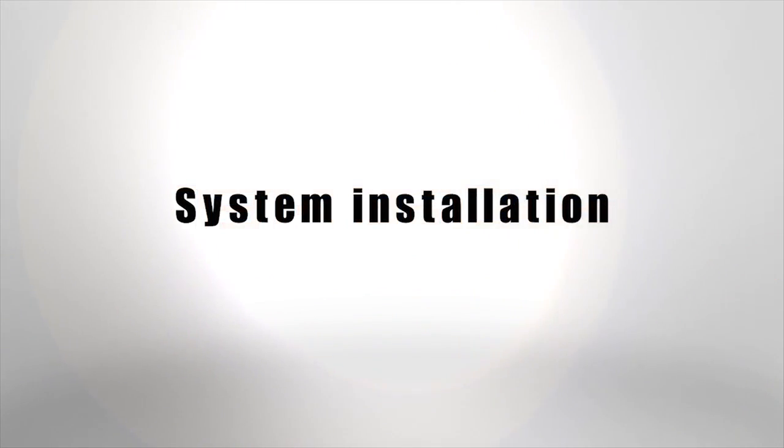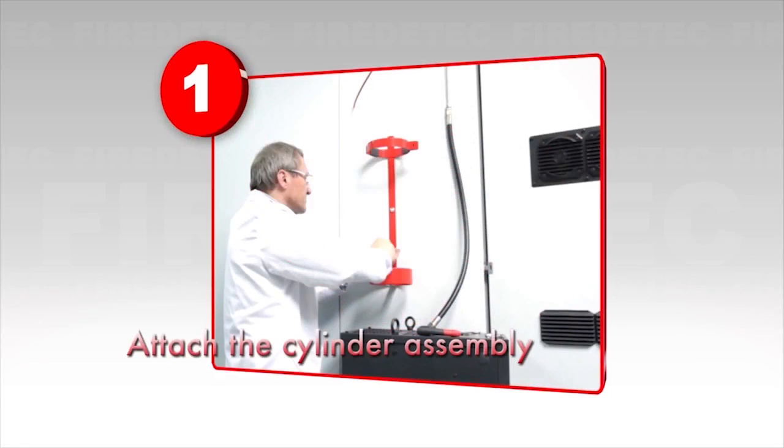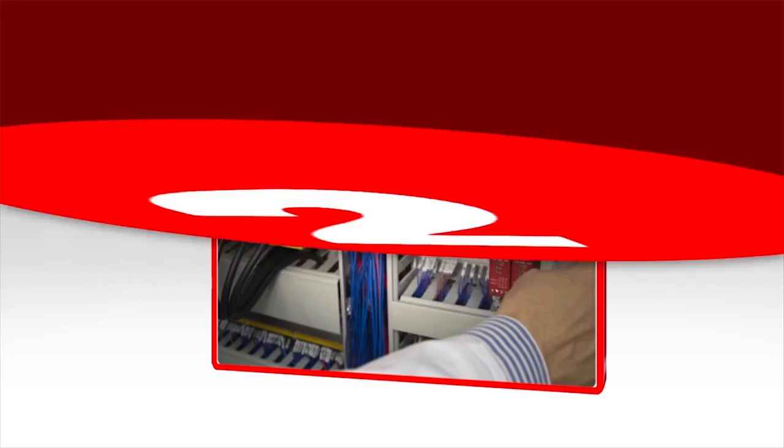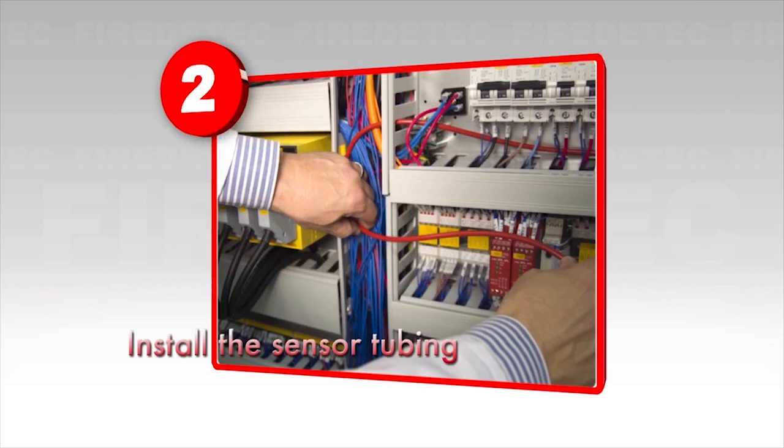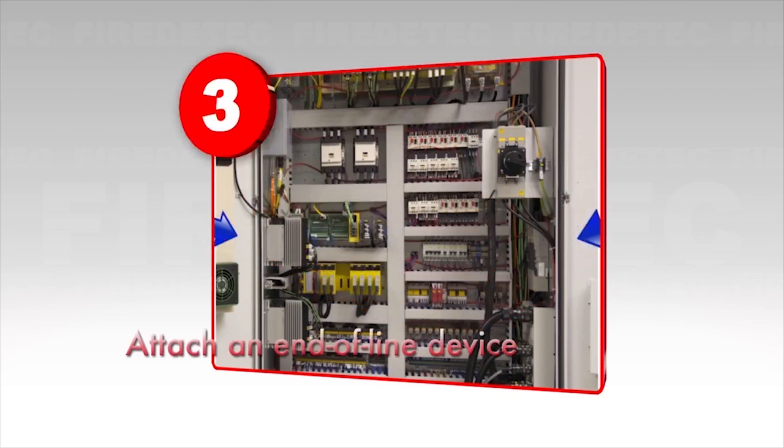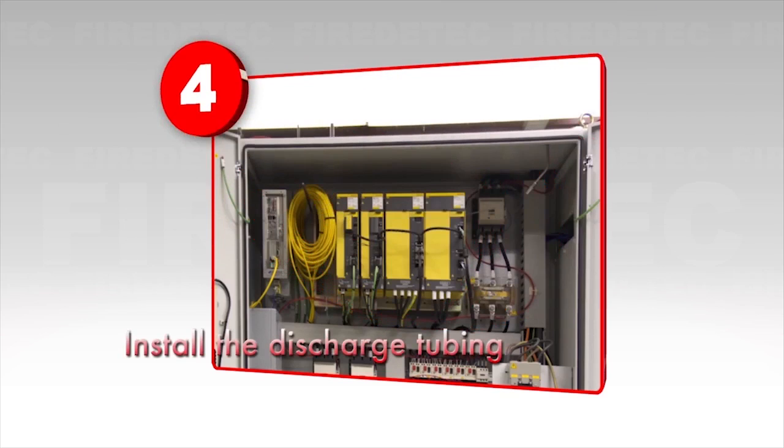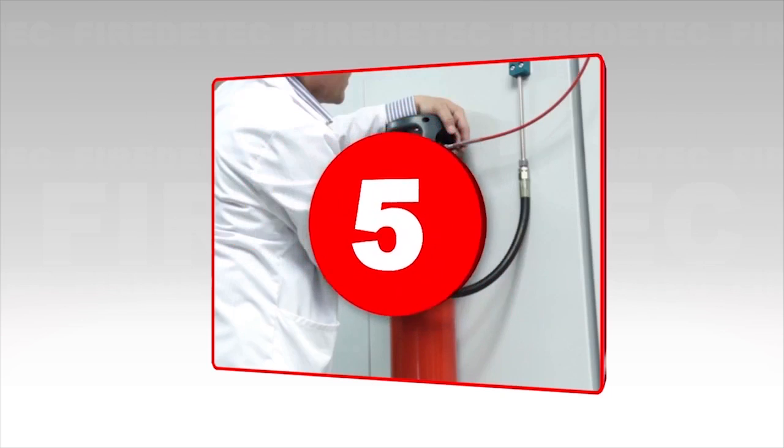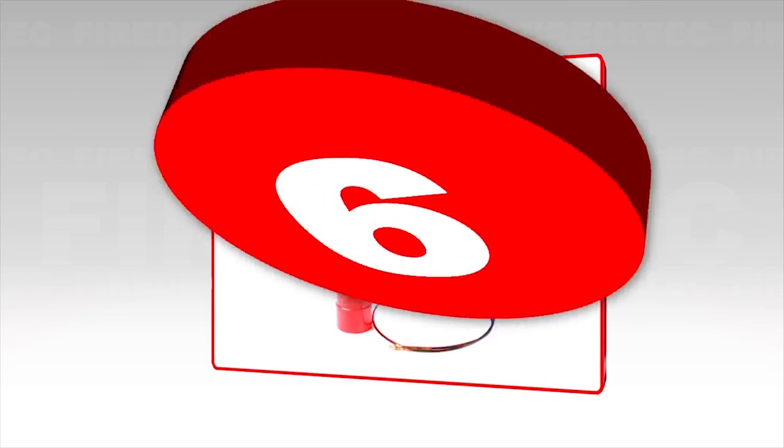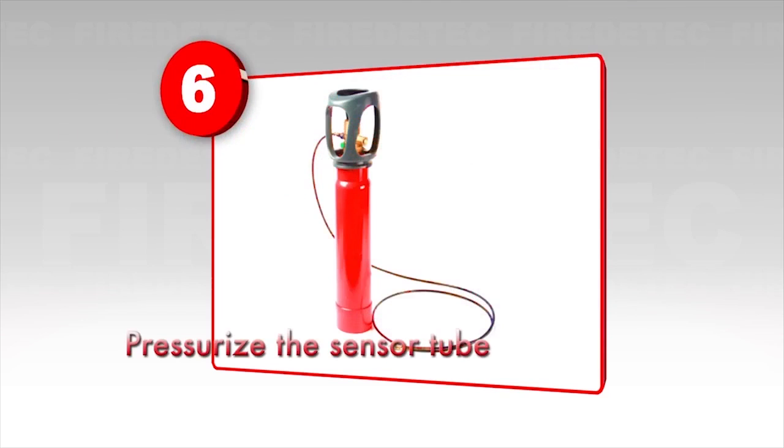Your fire detect system is easy to install in just six steps. First, attach the cylinder assembly. Then install the sensor tubing system. Three, attach an end-of-line device. Four, install the discharge tubing system. Five, connect tubing to the valve. And finally, pressurize the sensor tube and arm the system. To get started, confirm that you have all pieces of the fire detect kit in place.